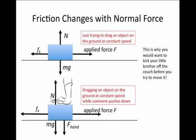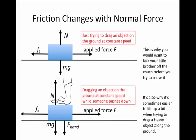This is why you wouldn't want to move a heavy couch with your little brother sitting on top — he acts like a hand applying extra downward force. It may also explain why when moving something big and heavy, it's sometimes advantageous to lift up on it a little, because that reduces the value of the normal force and thus reduces friction.